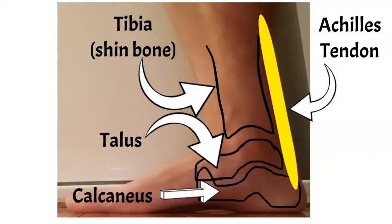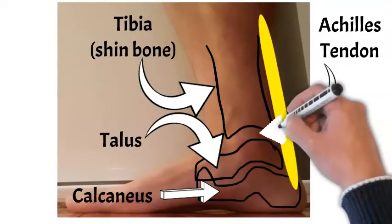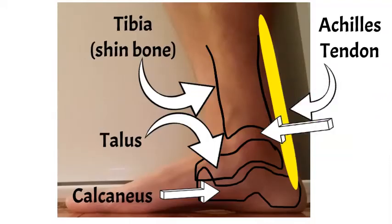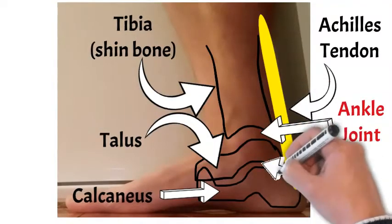And then we're going to mark for you where the actual ankle joint is. So it's between the talus and the tibia. And the subtalar joint is actually an area below the ankle joint between the talus and calcaneus.